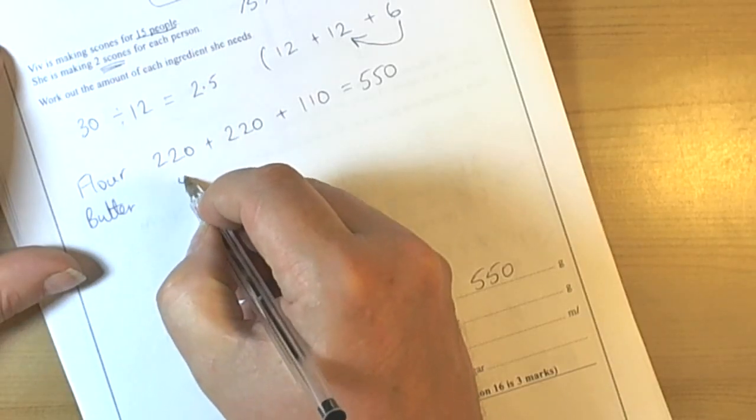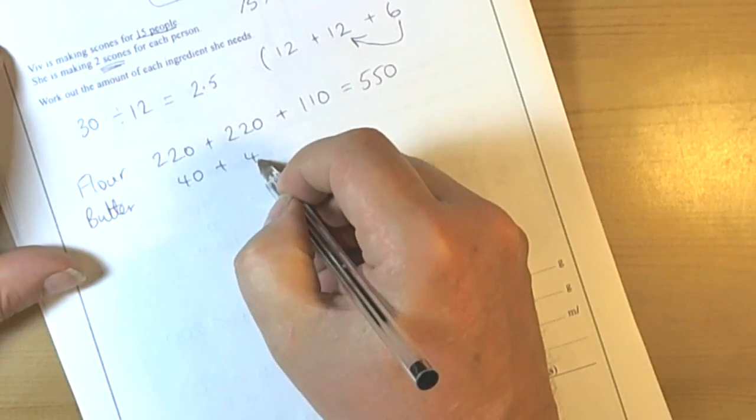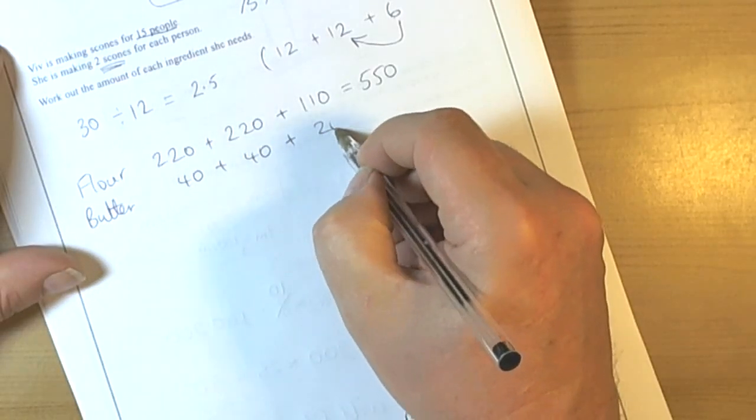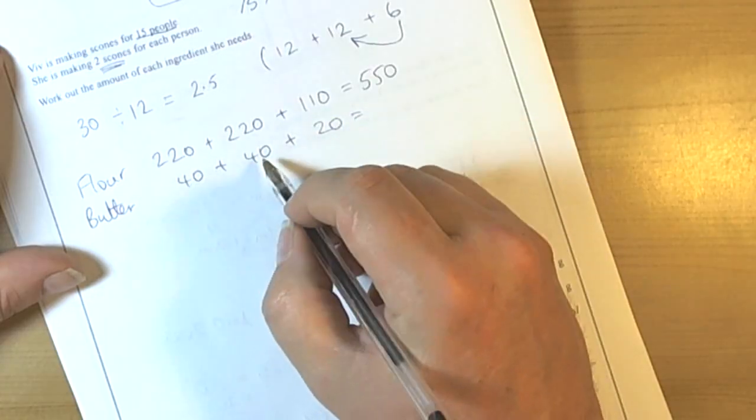We need 40 for 12, 40 for another 12, and then we need half the recipe again. So again we add those up: 40, 80, 100.